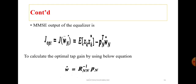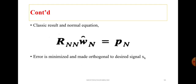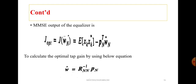The optimum tap gain is derived from the normal equation. Bringing R_nn to the right-hand side, the optimum tap gain w_n_cap equals R_nn inverse into p_n. So w_n_cap = R_nn⁻¹ p_n, where we take the inverse of the autocorrelation matrix R_nn, which requires n-cubed arithmetic operations.